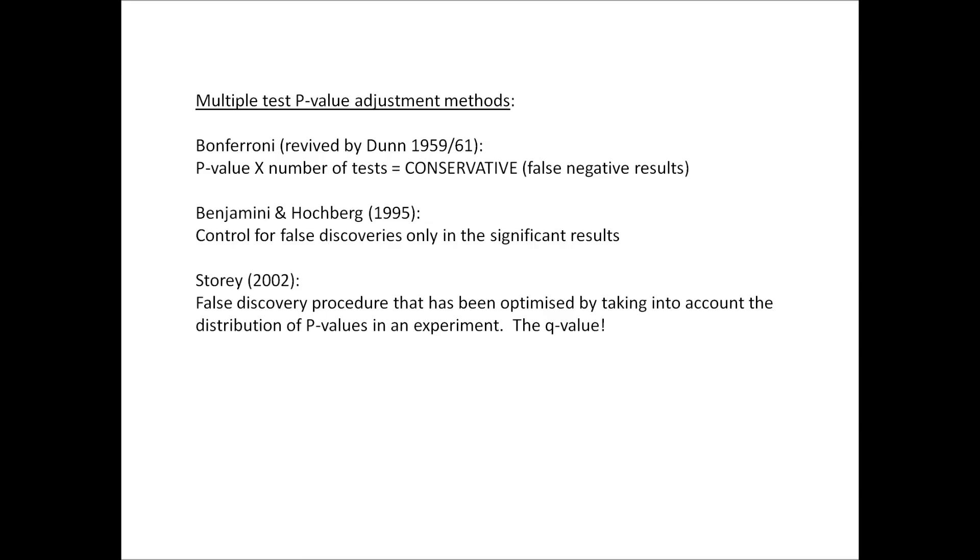The q-value, formalized by Storey in 2002, which makes it a relatively recent method, is a false discovery rate procedure that has been optimized by taking into account the distribution of p-values in an experiment.